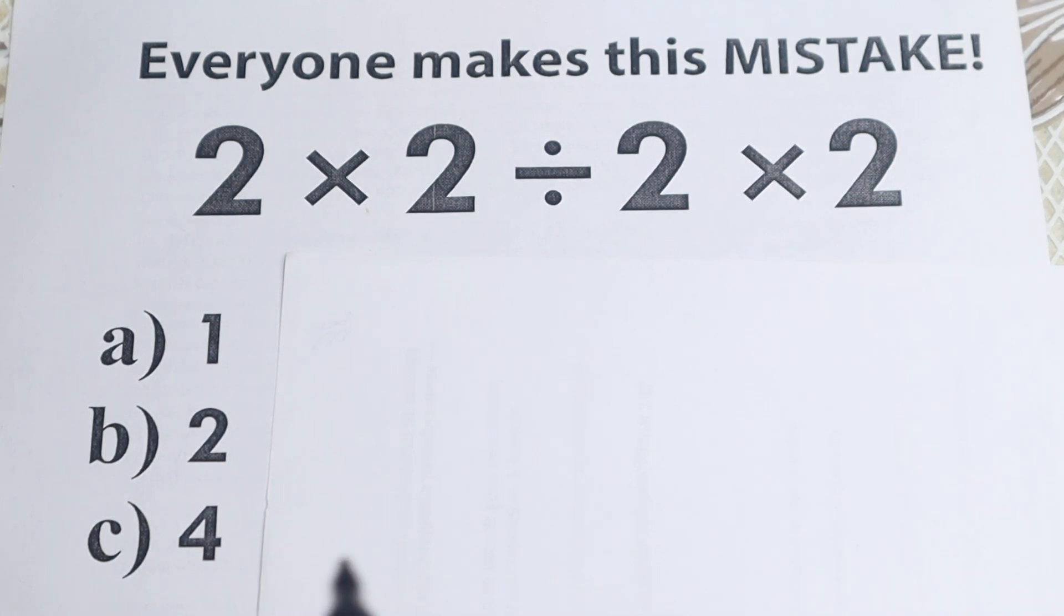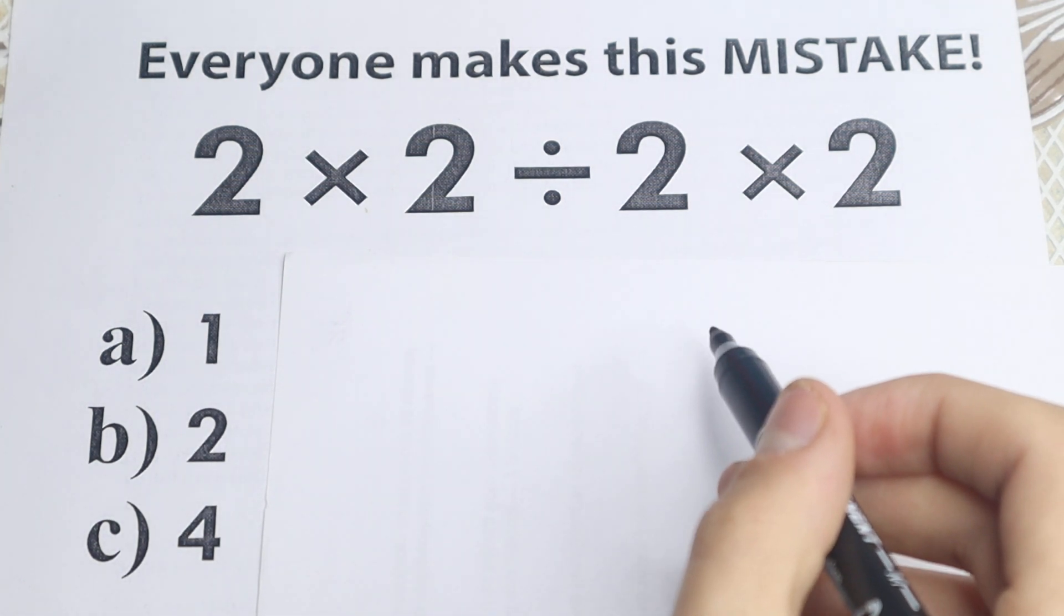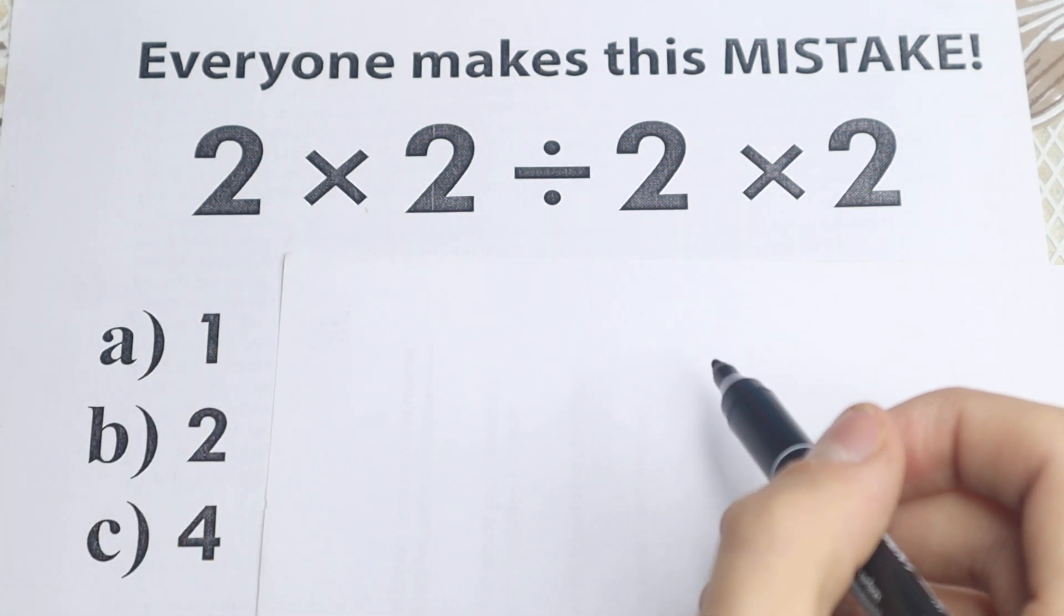So here is a problem today. We have a really interesting algebra problem: 2 times 2 divided by 2 times 2. As you can see, no huge numbers, no squares, cubes right here, only multiplication and division. But what is the correct answer?